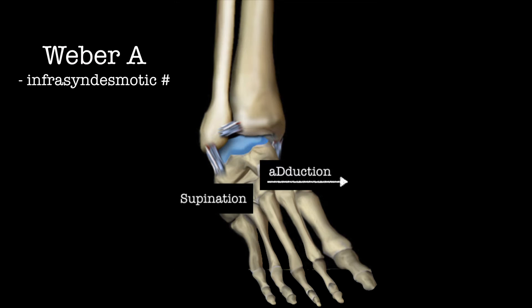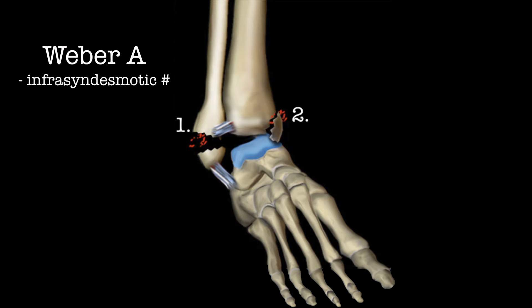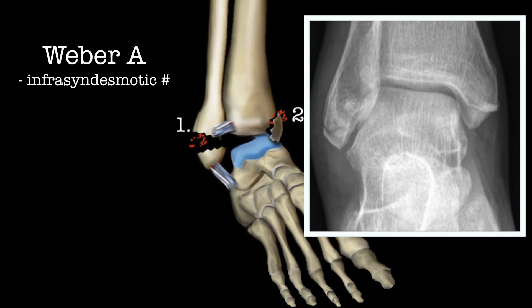In a Weber A fracture there is supination and adduction of the foot, and there are two stages. First, there is either tension on the lateral collateral ligaments causing them to rupture, or there may be an avulsion fracture of the lateral malleolus. Secondly, there can be an oblique fracture of the medial malleolus. Looking at this X-ray, notice that the syndesmosis is intact. There is an avulsion fracture of the lateral malleolus below the syndesmosis, and there may be an oblique fracture of the medial malleolus, though this is not evident here.